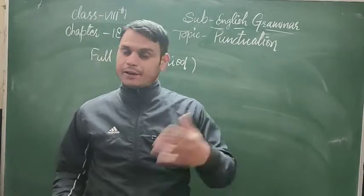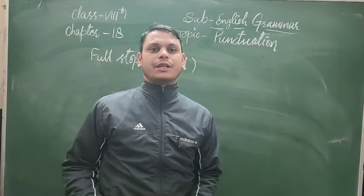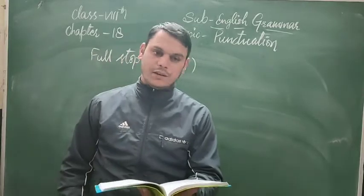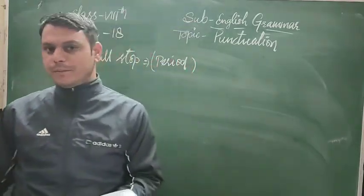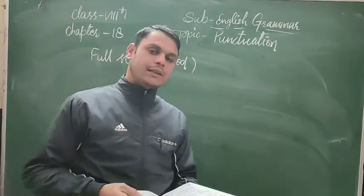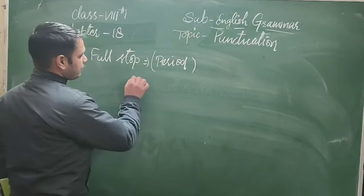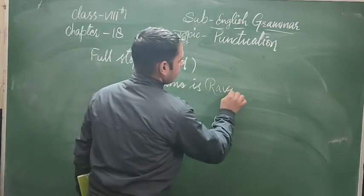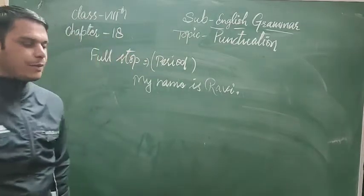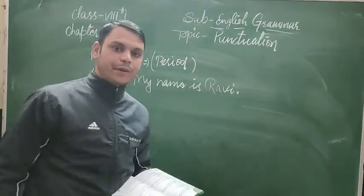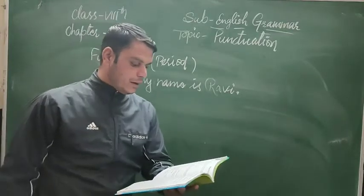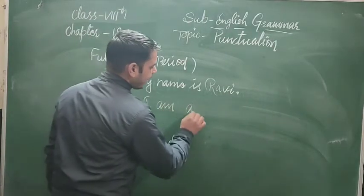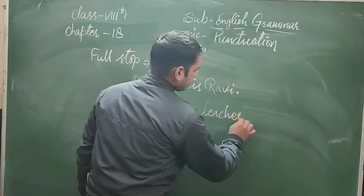'My name is Ravi', 'His name is Gita' — these are assertive sentences. An imperative sentence gives a command, for example: 'Go.' At the end of an assertive or imperative sentence, you use a full stop. For example: 'I am a teacher.' — full stop.